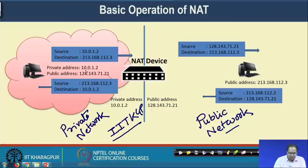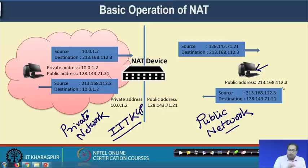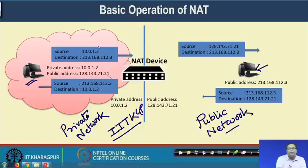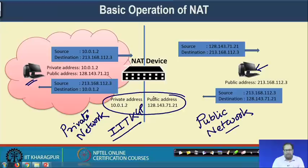Whenever this machine wants to send a packet to an outside machine — say a machine with public address 213.168.112.3 — you prepare an IP packet with the source IP of 10.0.1.2 (the private IP of this machine) and the destination as the public IP where you want to send the packet. With this private IP you will not be able to send a packet to the public network.